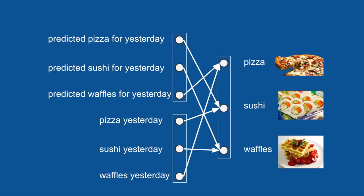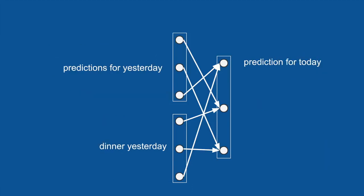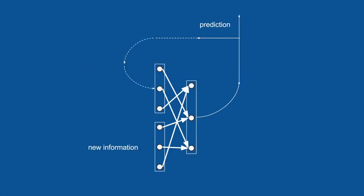Now we can group together our inputs and outputs into vectors, separate lists of numbers. And it becomes a useful shorthand for describing this neural network. So we can have our dinner yesterday vector, our predictions for yesterday vector, and our prediction for today vector. And the neural network is just connections between every element in each of those input vectors to every element in the output vector. And to complete our picture, we can show how the prediction for today will get recycled. The dotted line there means hold on to it for a day and then reuse it tomorrow. And it becomes our yesterday's predictions tomorrow.